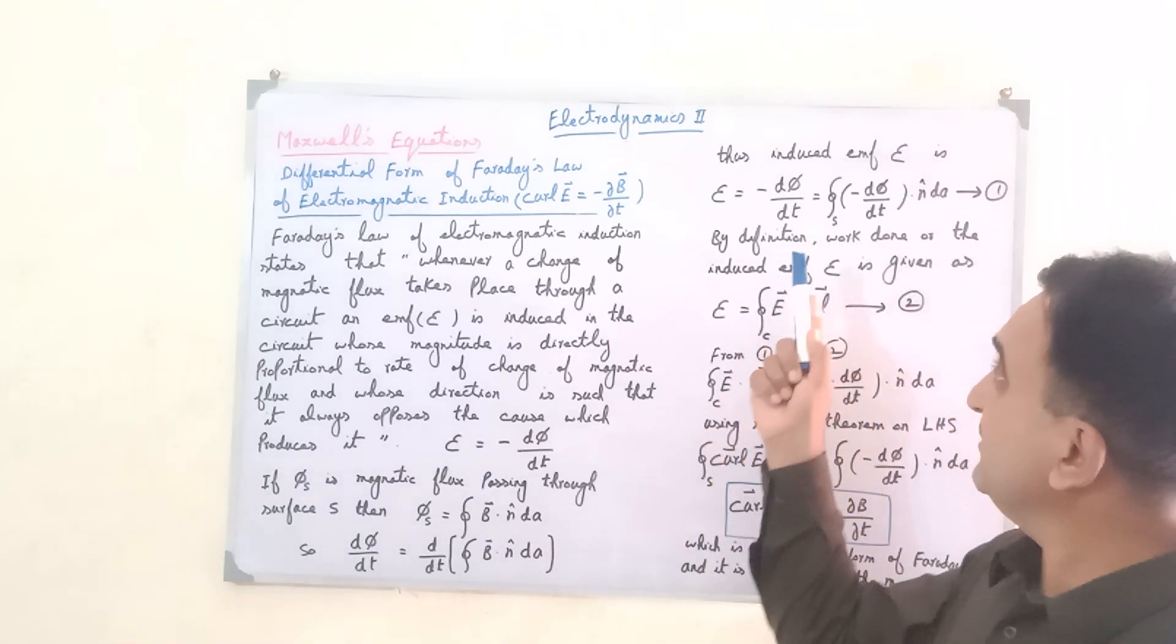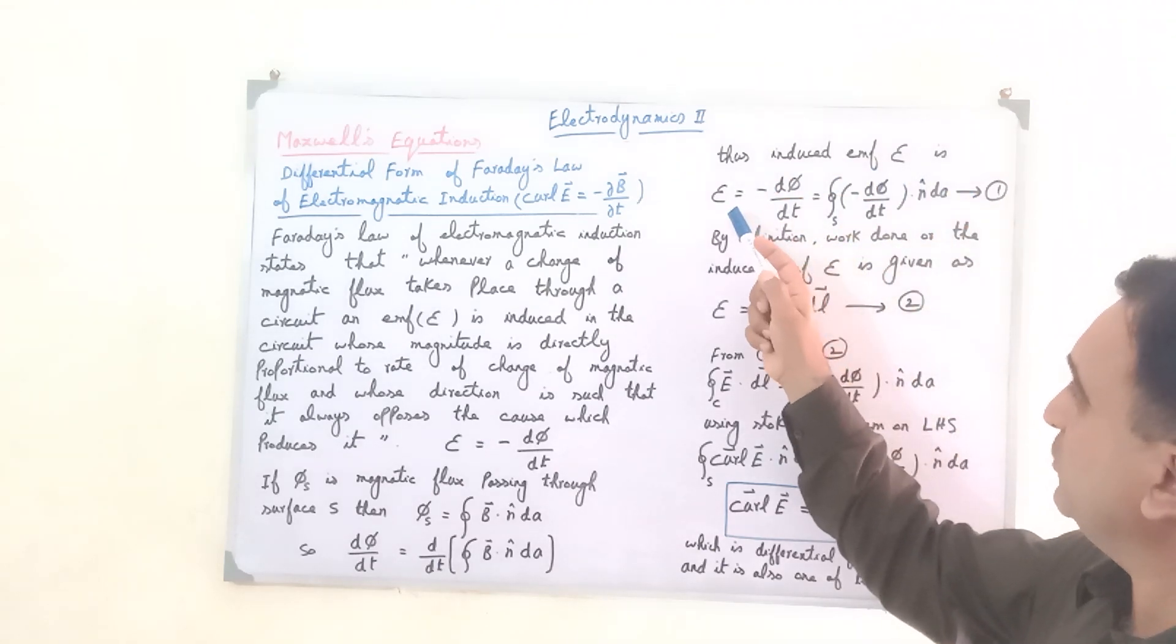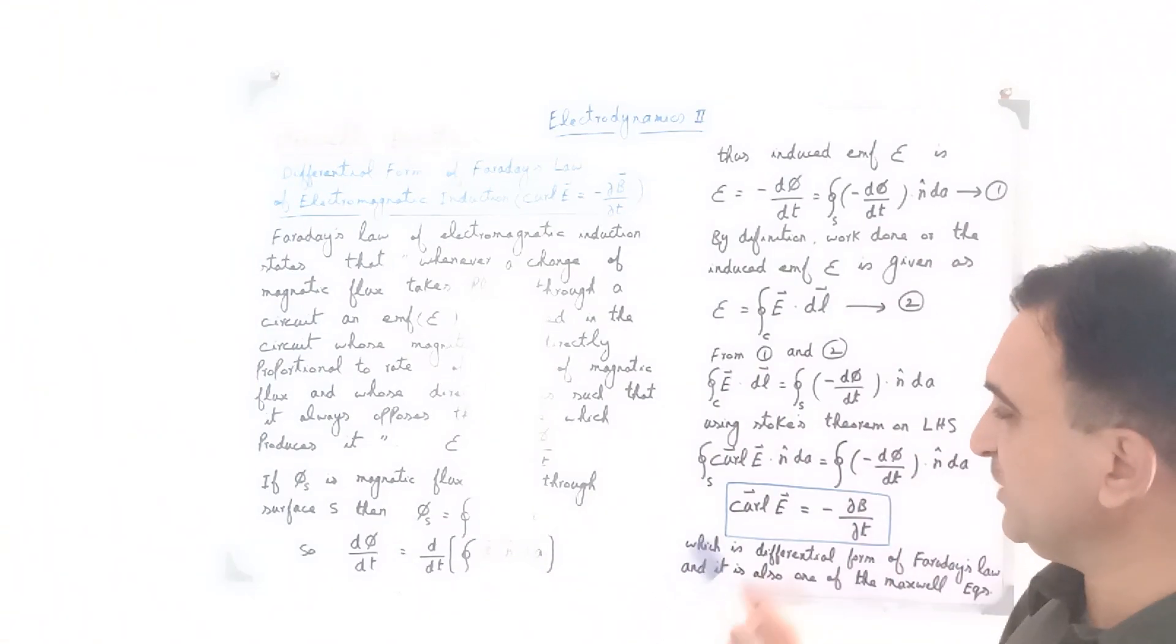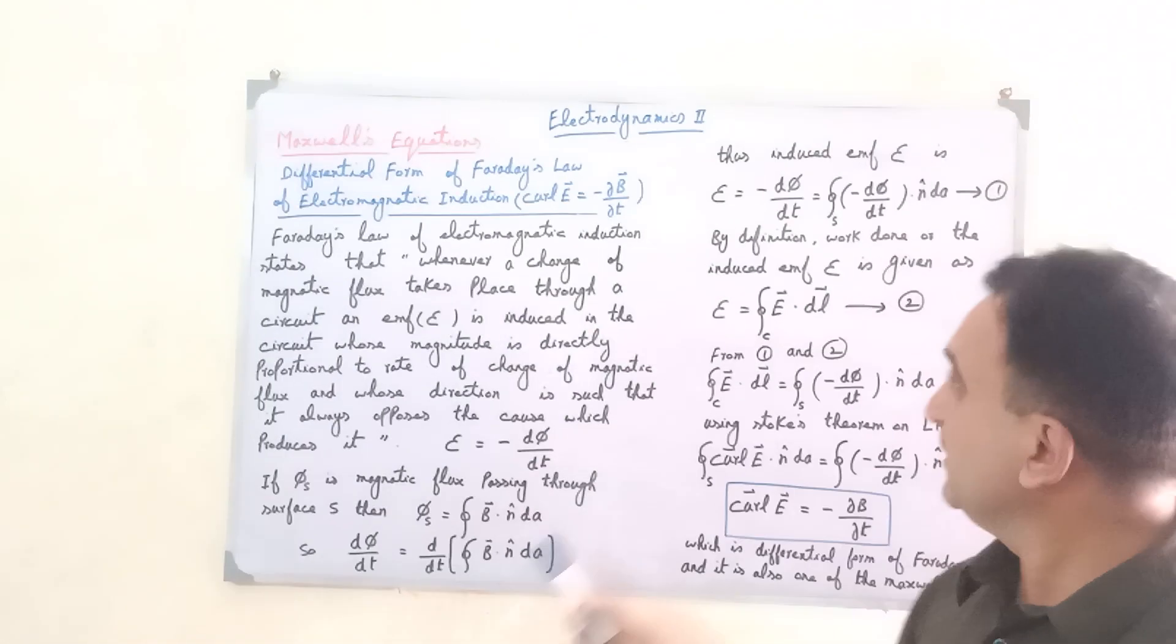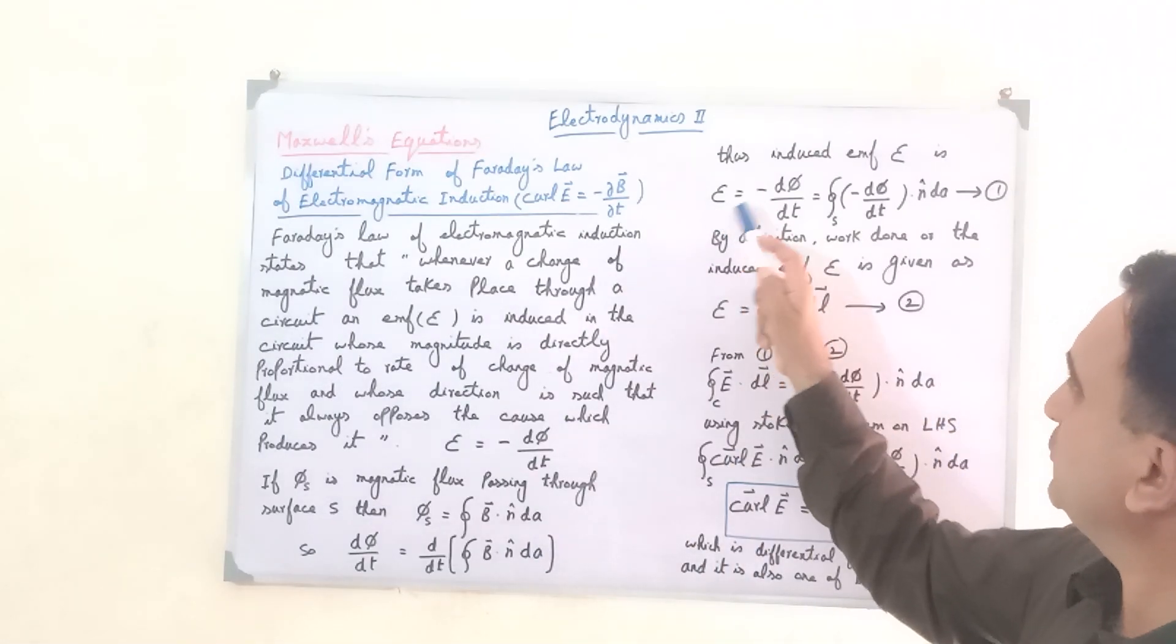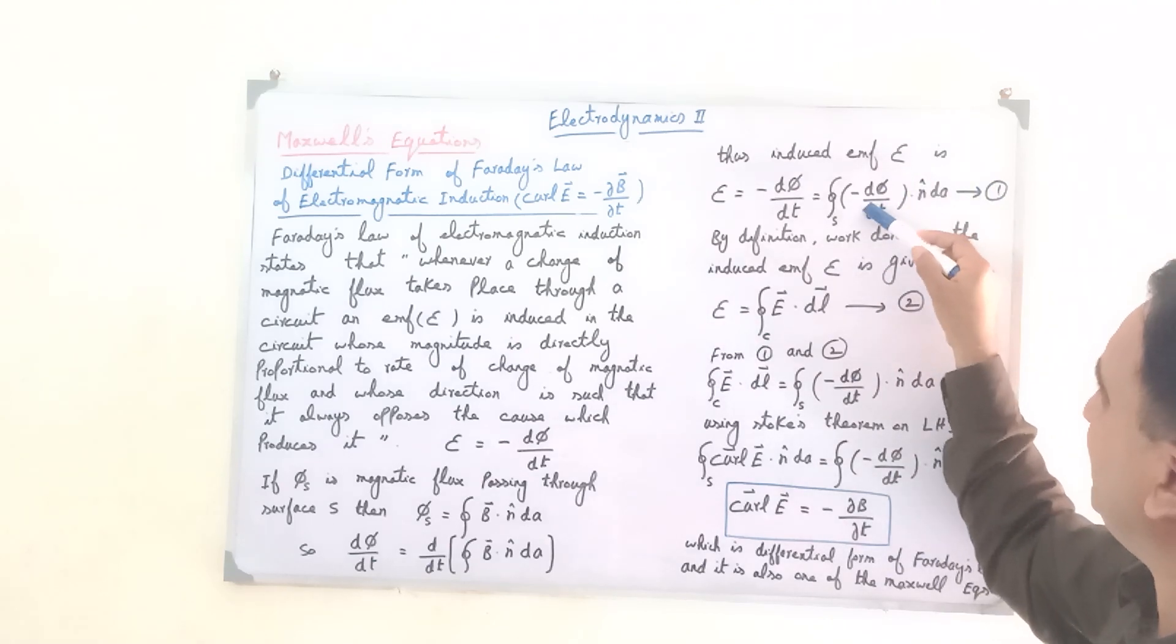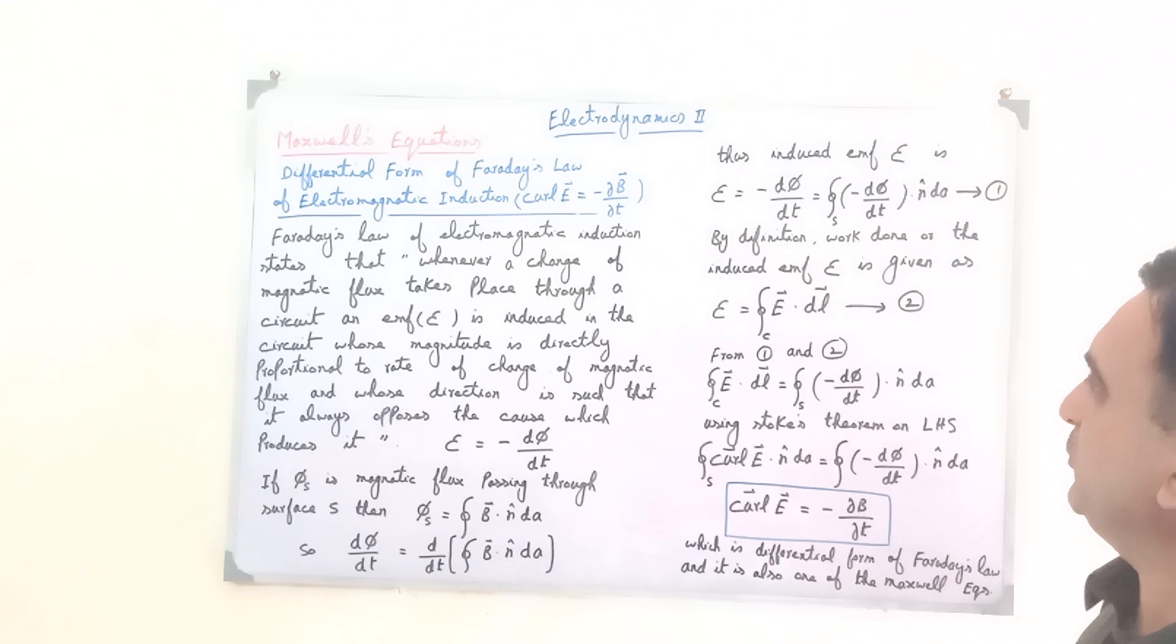From this we can write that induced EMF E is equal to minus d phi by dt, which equals minus integral d by dt B dot n unit vector dA. This is equation number 1.